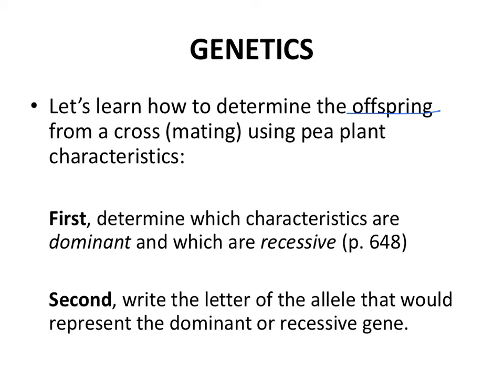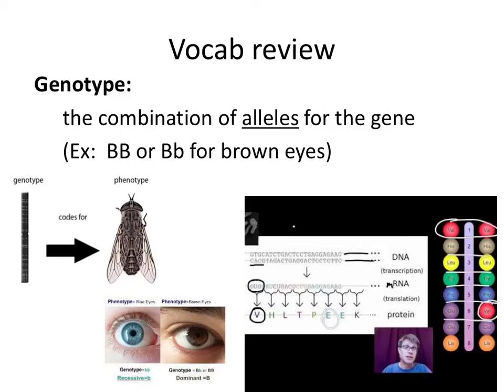There are a couple of things we need to do. First, you have to determine what characteristics are actually dominant and which ones are recessive. And secondly, we'll come up with a letter to actually represent the allele for its dominance or recessiveness. We're going to use letters to represent genes. If you can use these words and this terminology, you're really going to be able to grasp genetics and solve genetic problems in the future.